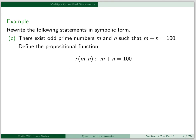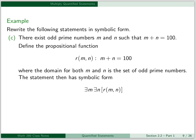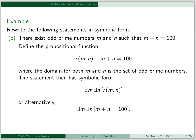To write this in symbolic form, define the propositional function r of m, n to be m plus n is equal to 100, where the domain for both m and n is the set of odd prime numbers. The statement then has symbolic form: there exists an m, there exists an n, such that r of m, n. Or alternatively: there exists an m, there exists an n, such that m plus n is equal to 100.